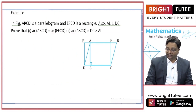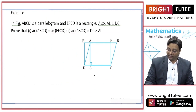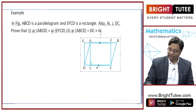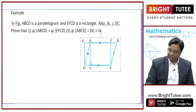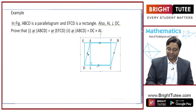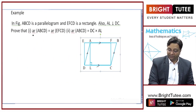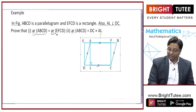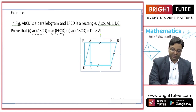In figure ABCD is a parallelogram. This line is parallel to this line, and this line is parallel to this line. Prove that area of ABCD is equal to area of EFCD.